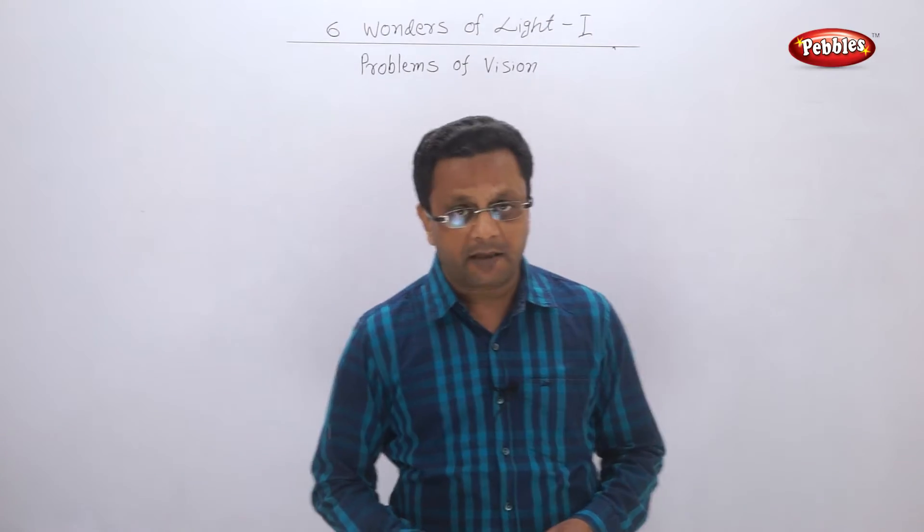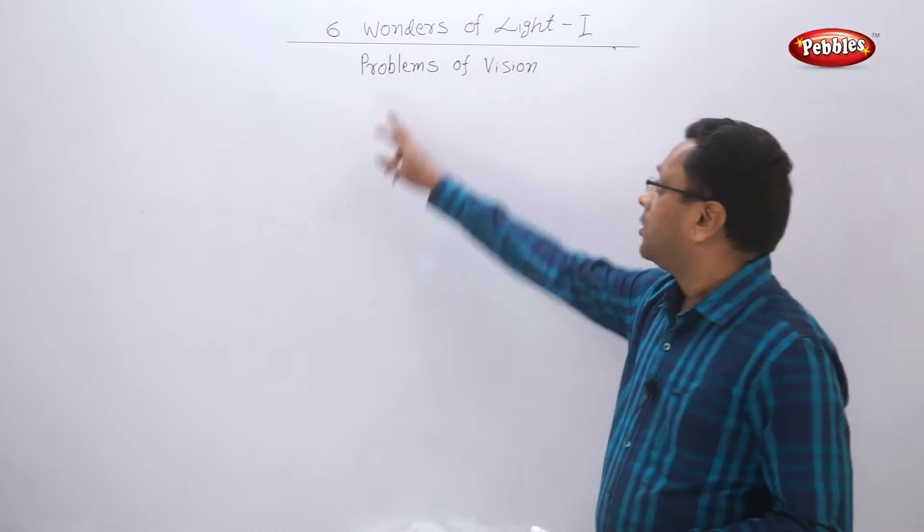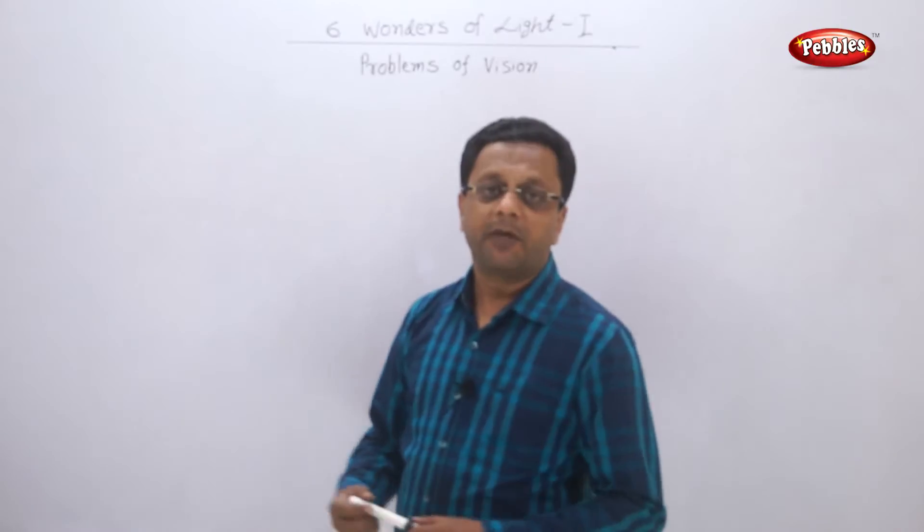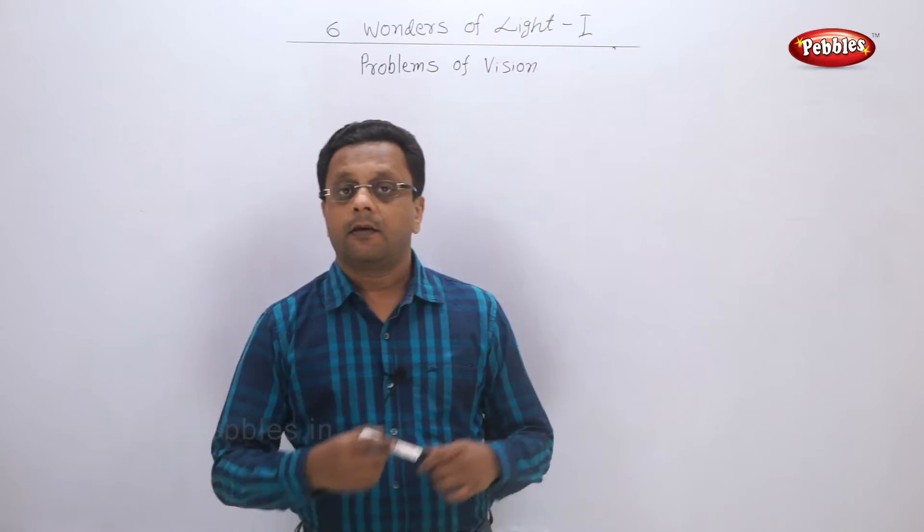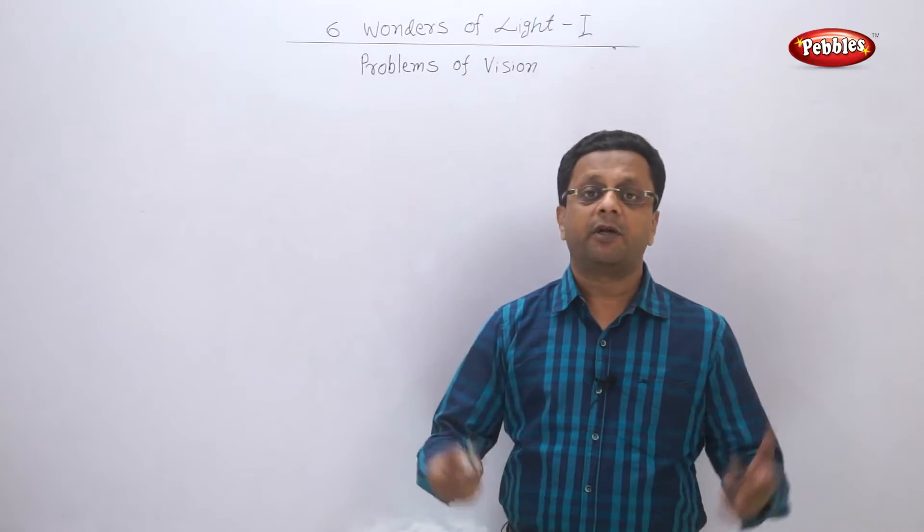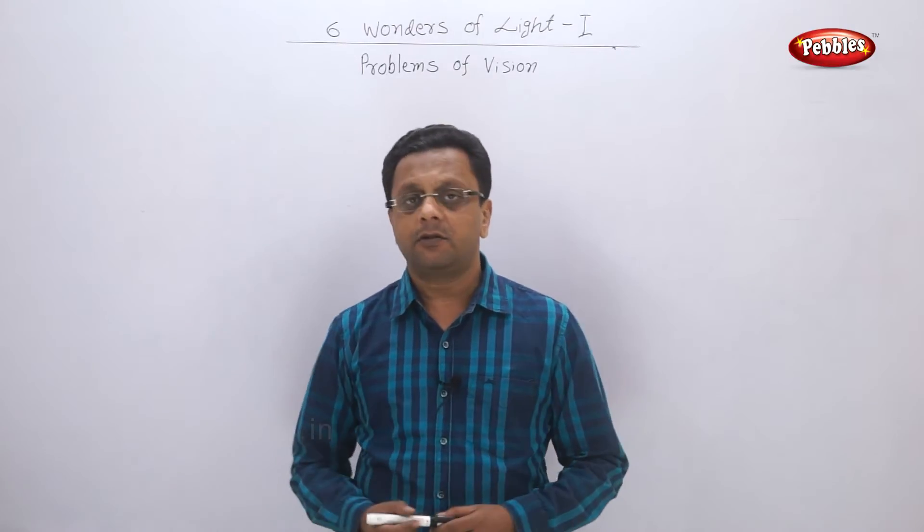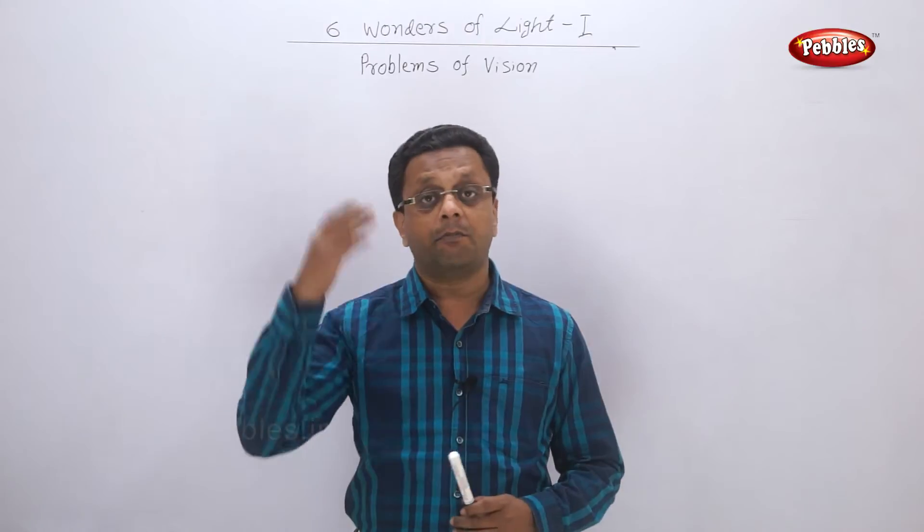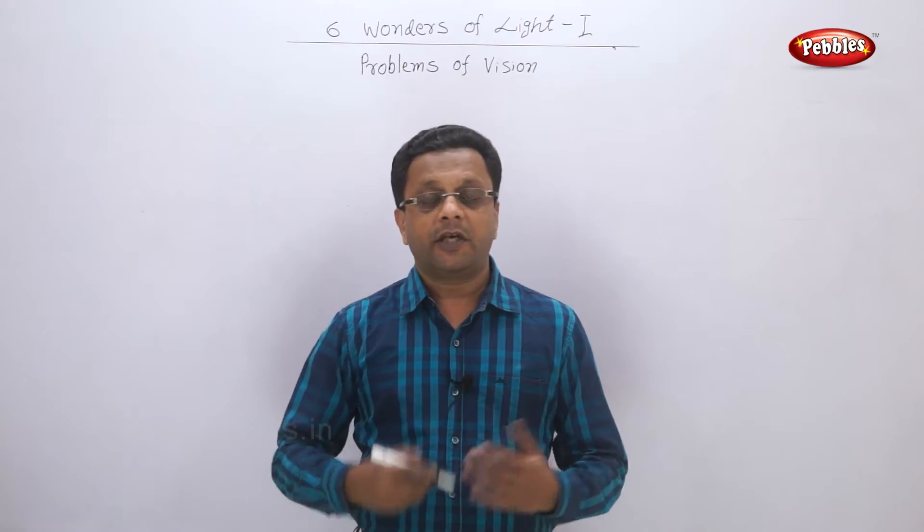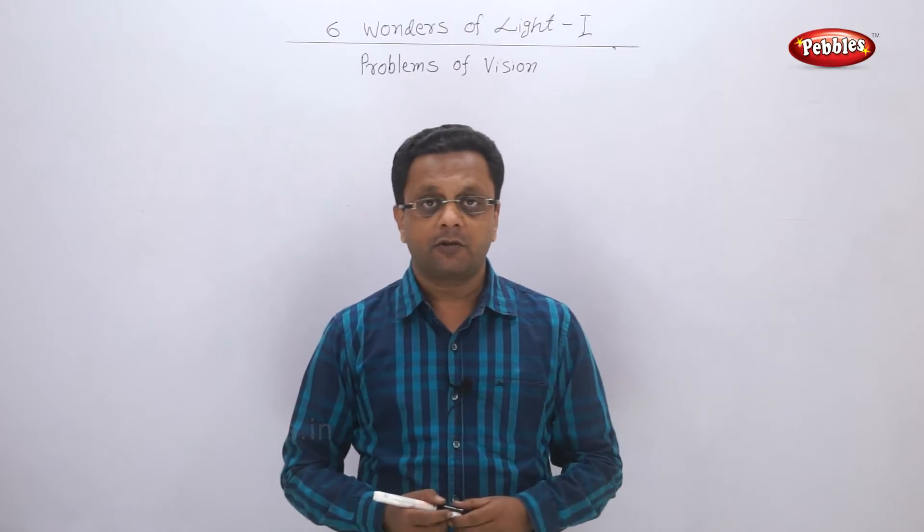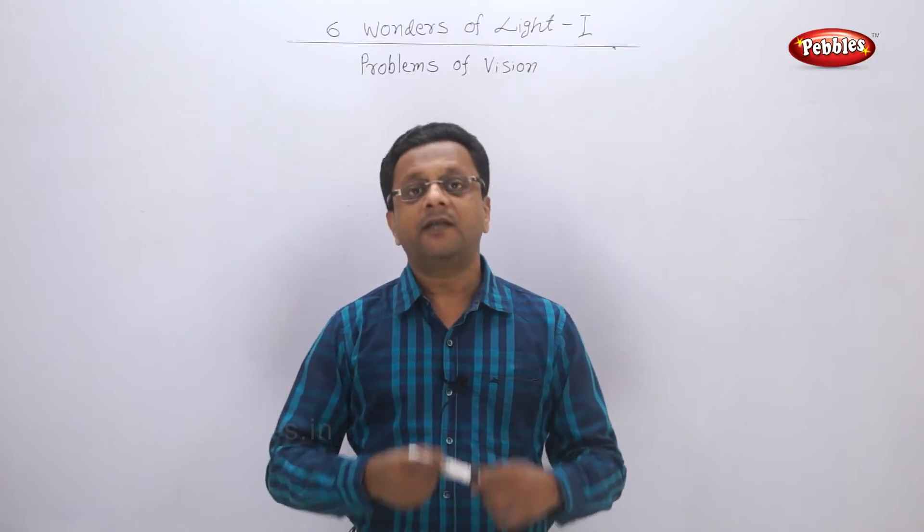Hello friends, welcome back. Today we are going to see problems of vision. Nowadays we see that many people use spectacles, contact lenses, or undergo laser surgery of the eye. Why does this happen? Because their vision gets blurred - they cannot see either long distance objects or short distance objects or both. Now why does this happen?